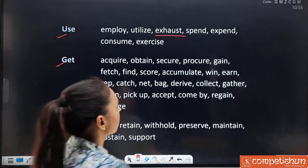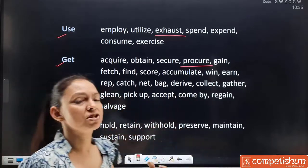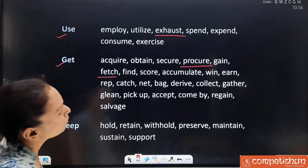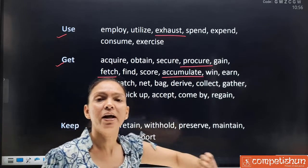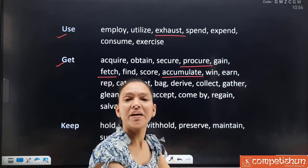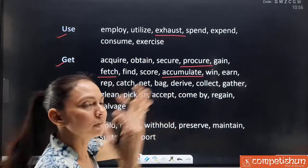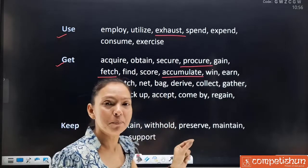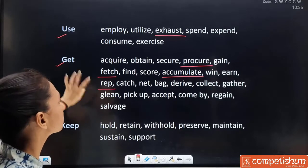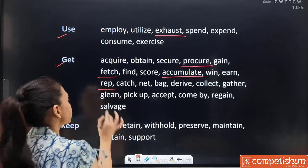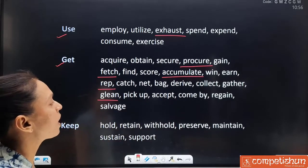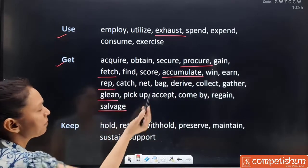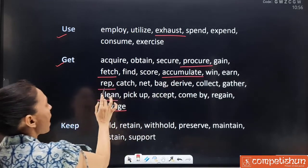Synonyms for 'get': acquire, obtain, seek, procure, gain, fetch. 'Fetch' also comes in 'bring' — 'fetch a glass of water for me.' Then: find, score, accumulate (gather, ekhatta karna), win, earn, reap. 'Reap' is a small but unfamiliar word — R.E.A.P. — and it means get. Then: catch, net, bag, derive, collect, gather, glean (a new word), pick up, accept, come by, regain and salvage. Key less-known words to remember: fetch, accumulate, reap, glean and salvage.